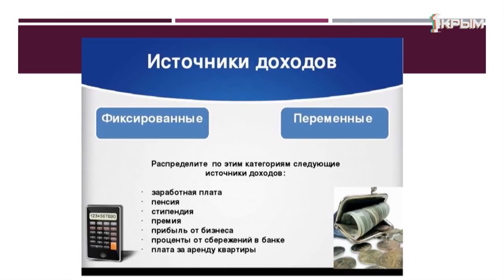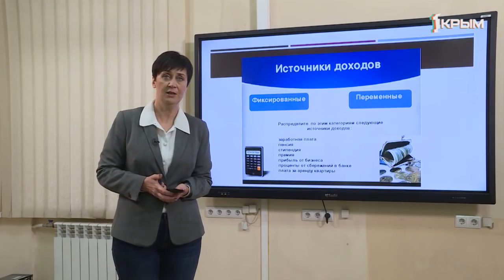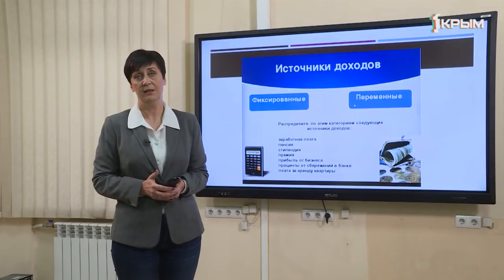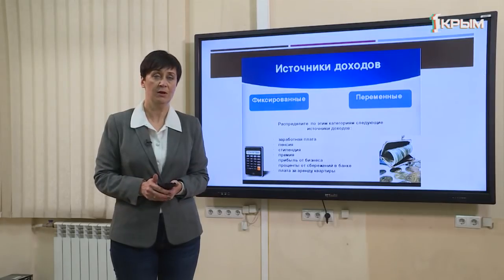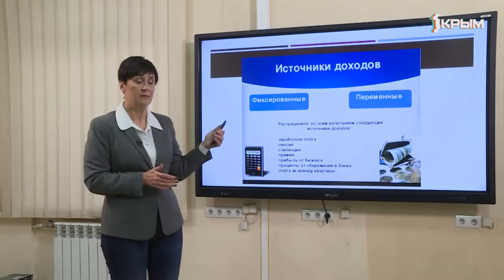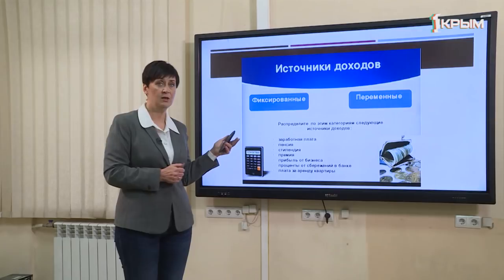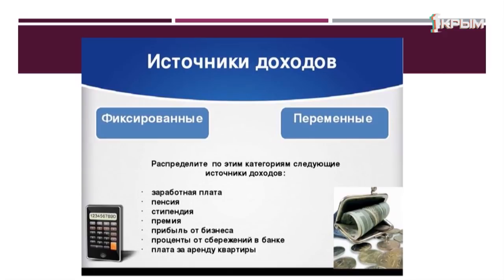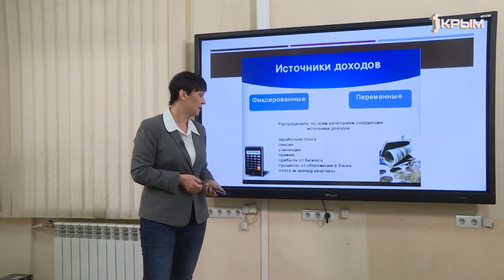Фиксированные доходы — это стабильные, постоянные доходы, на которые семья может рассчитывать ежемесячно или ежегодно. Переменные доходы зависят от многих факторов — например, от инфляции или от трудовых усилий членов семьи, как премия. Небольшое упражнение: из перечисленных доходов определите, какие фиксированные, а какие переменные. Прибыль от бизнеса, проценты от сбережений в банке и премия — это переменные доходы, на которые семья не всегда может стабильно рассчитывать.